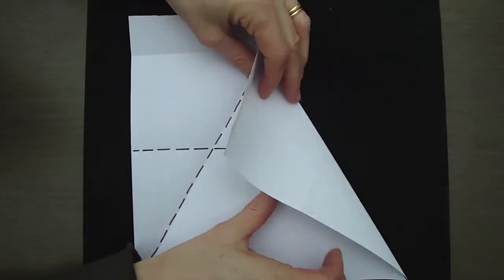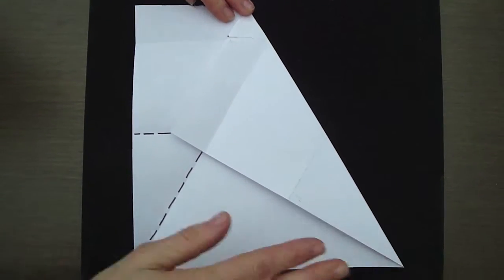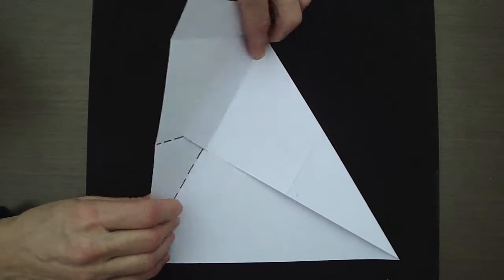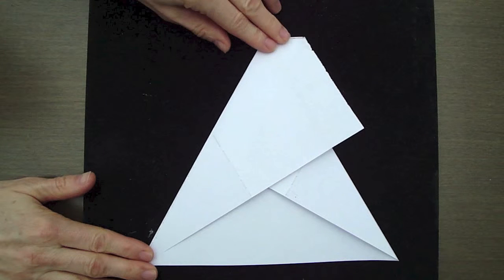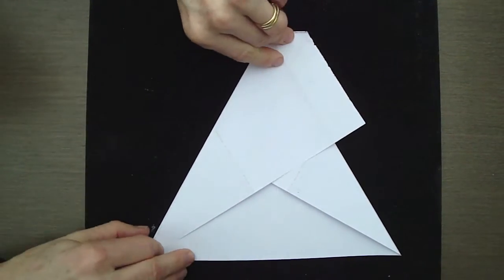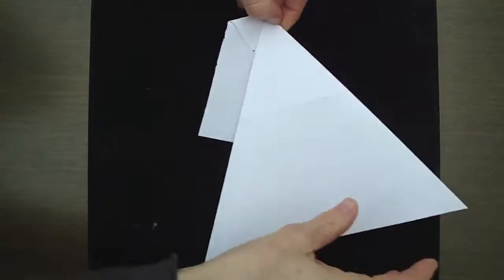Now fold along the two creases that you have until you end up with an equilateral triangle that looks like this. Now turn the whole triangle over. Here it is again.